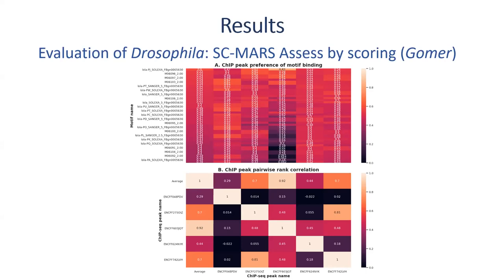In our observation, the scores were not really that close to one as we would expect when using the human data. This left us with the question: what could be happening with this transcription factor? Looking at the second panel, we can see there is no good correlation between the different ChIP-seq datasets available from the database. Ideally, because they are from the same transcription factor, they should correlate well with each other since they could all be enriched.